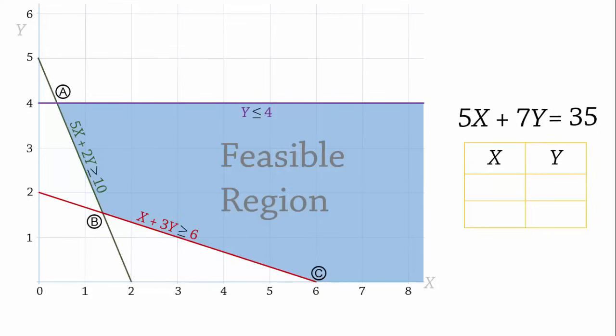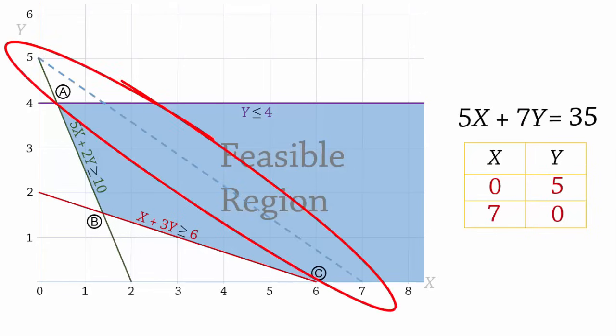Next, we find the points to draw the objective function line. When x equals 0, y equals 5, and when y equals 0, x equals 7. So the objective function line is this blue dotted line here.